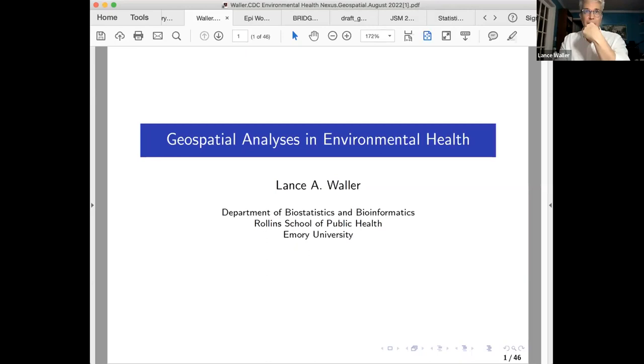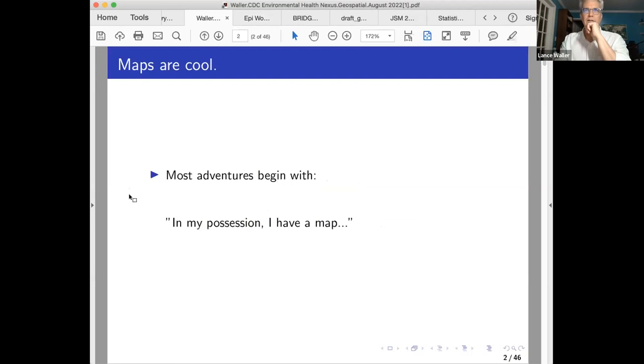Dr. Waller is a professor in the Department of Biostatistics and Bioinformatics at Rollins School of Public Health at Emory. He's a member of the U.S. National Academy of Science Board on Mathematical Sciences and Analytics. His research involves the development of statistical methods for geographic data, including applications in environmental justice, epidemiology, disease surveillance, and disease ecology. Thank you very much. It's a pleasure to be here.